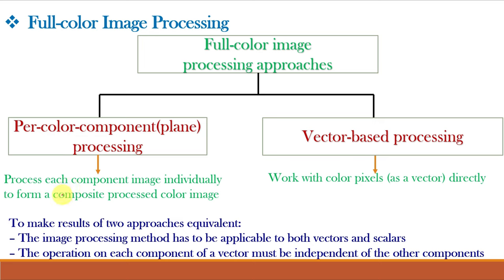For per color component processing, we process each component image individually and then form a composite processed color image from the individually processed components. We know that these components or planes are RGB plane, HSI plane, etc. While for the vector based processing, we work with color pixels directly.